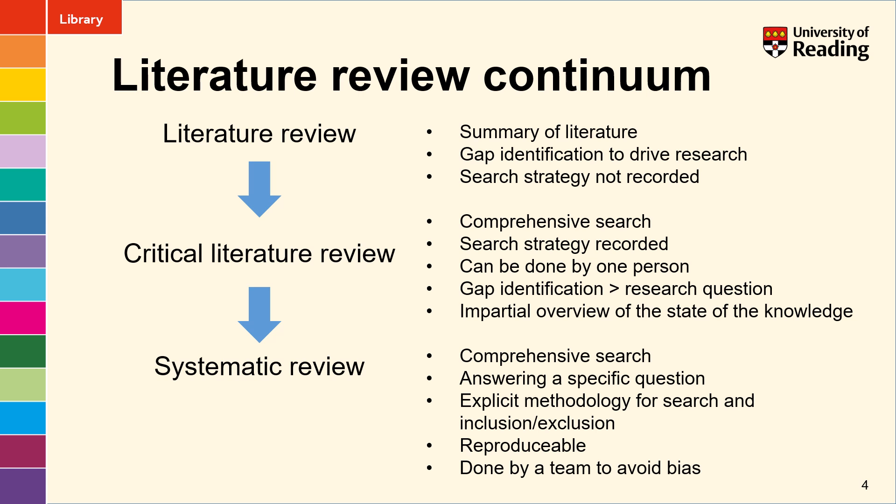A systematic review also includes a comprehensive search but it's usually seeking to answer a specific question. It has a very explicit methodology for the search, which is usually reproduced in the appendix, and it has a protocol which will include inclusion and exclusion criteria. The whole idea of a systematic review is that there is enough information about how it was conducted for it to be reproduced, and professional systematic reviews are usually done by a team to avoid any bias in the evaluation of the literature.